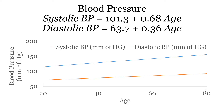Diastolic also changes — it starts at around 70 at age 20, and at 80 years old it's about 93. So diastolic also increases by about 20 millimeters of mercury. So if you need some kind of estimate of blood pressure, this is the formula to use.